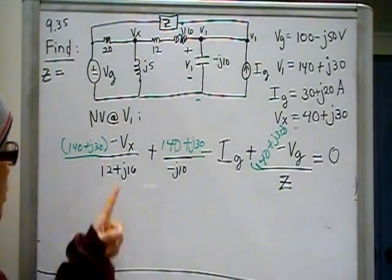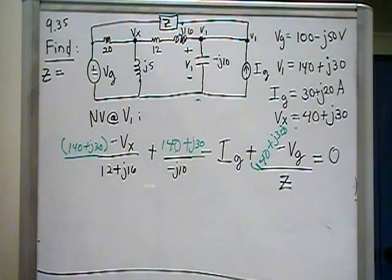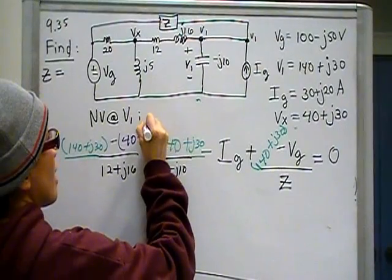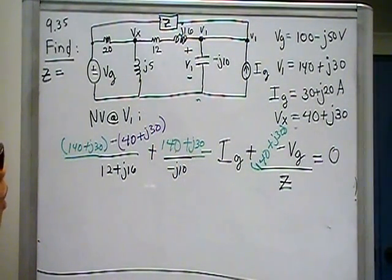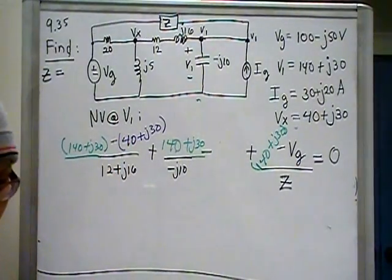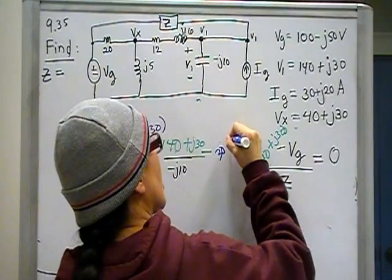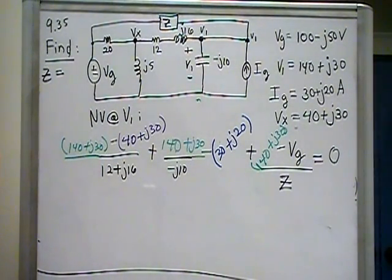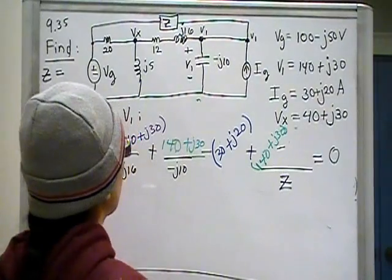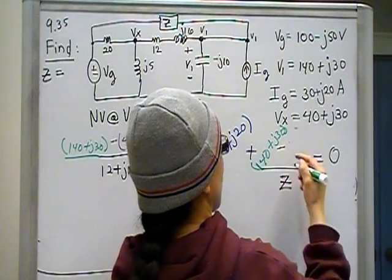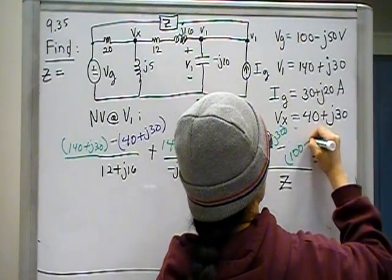Great. Now what else do we need? Vx. We found out what vx was, and we know it's right because we verified with spice modeling. Vx is 40 plus j30. Great. What else is there? I sub g. I sub g we know is 30 plus j20 because the book told us. So i sub g goes in here as 30 plus j20, wrap it in parentheses because it gets a minus in front of it. And the last piece is v sub g. And v sub g, I'm out of colors so we are back to green. So v sub g is 100 minus j50. Wrap it in parentheses because it's getting a minus in front of it. 100 minus j50.